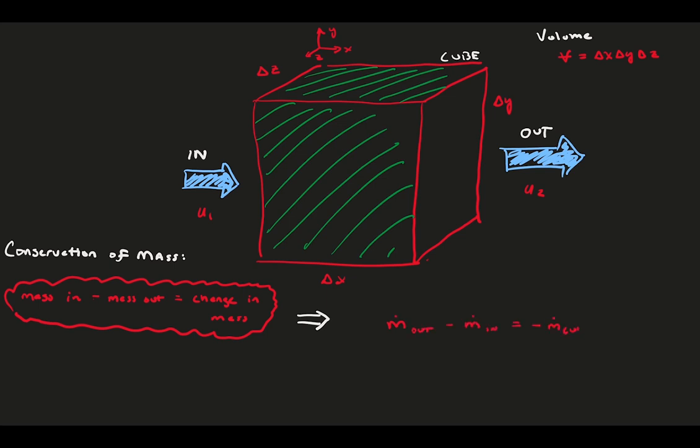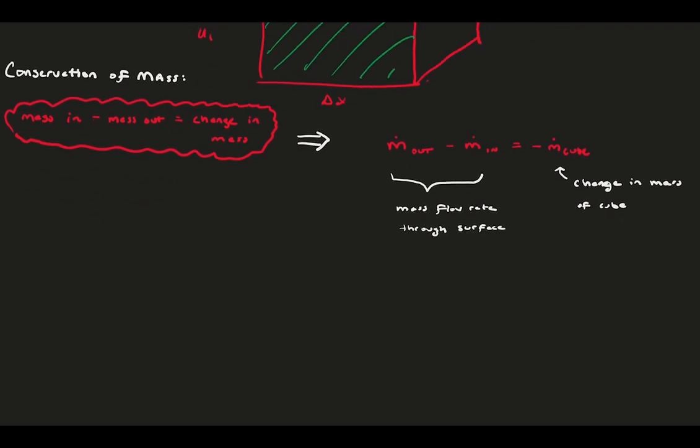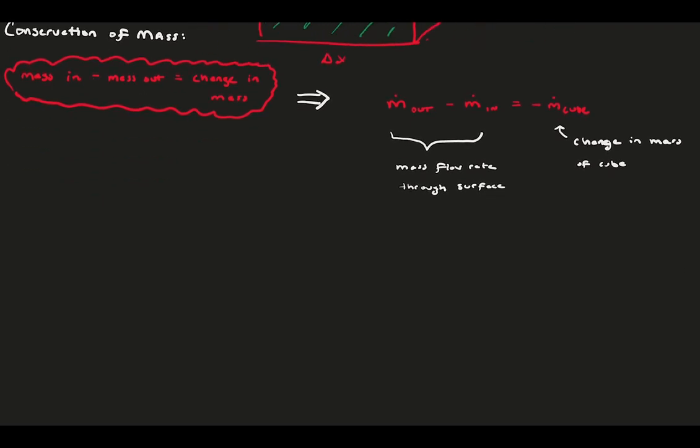We can write this more officially as a balance of mass flow rates into and out of the cube. Here, the left-hand side represents the flow through our surfaces, and the right-hand side is the rate of change of the cube mass. The flow rate through a surface, as we talked about above, is rho ua, where a is the area. And, the time of rate of change of the mass of the cube is delta m over delta t. Let's use the fact that the mass of the cube is the density of the fluid inside the cube times the volume of that cube, so rho times v.